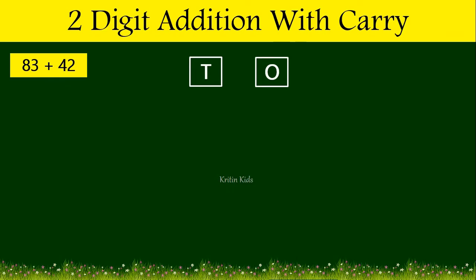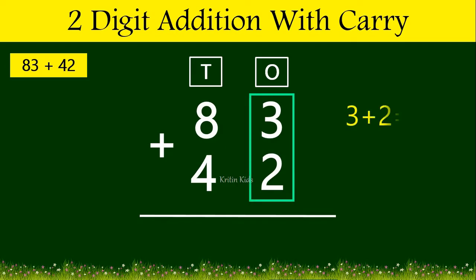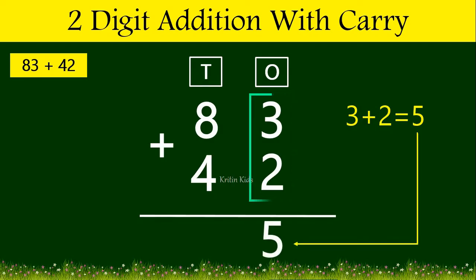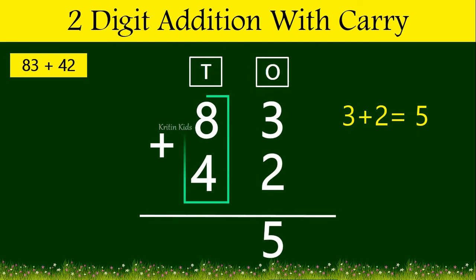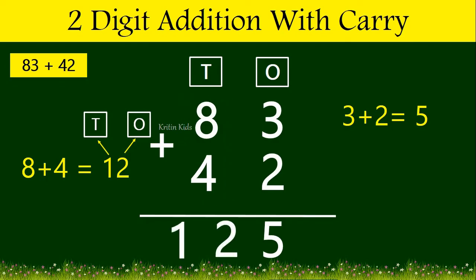Let us take one more example: 83 plus 42. Here, 3 is on the ones position and 8 is on the tens position. In 42, 2 is on the ones position and 4 is on the tens position. Now let's add them: 3 plus 2 gives us 5. It is a single digit, so we write it as 5. Now let's add the next numbers on the tens position: 8 plus 4 gives us 12. 2 is at the ones position and 1 is at the tens position, so we write 12. So 83 plus 42 gives us 125.